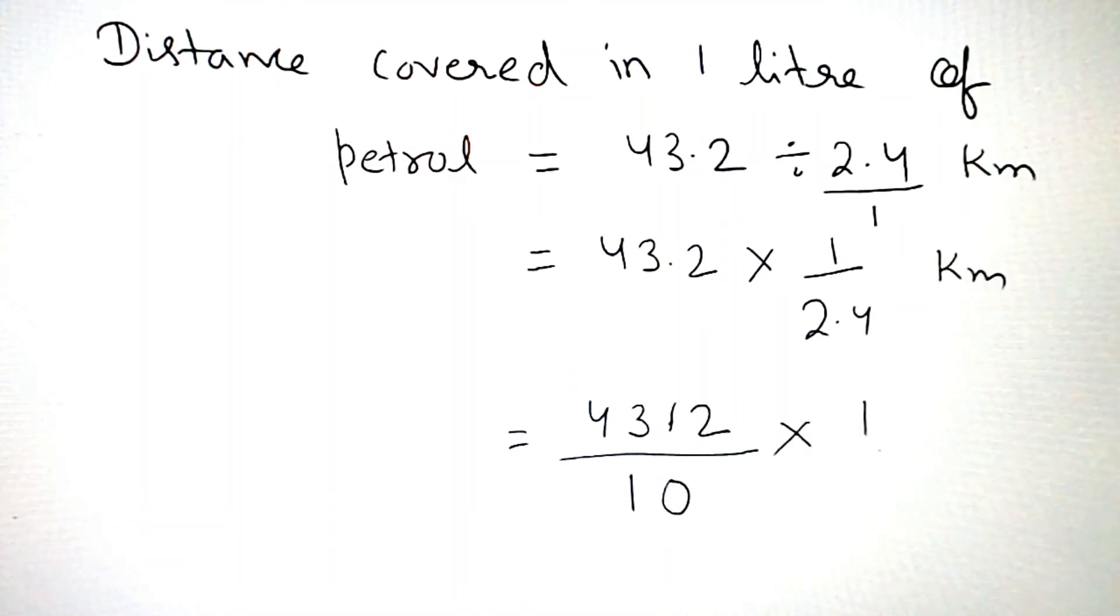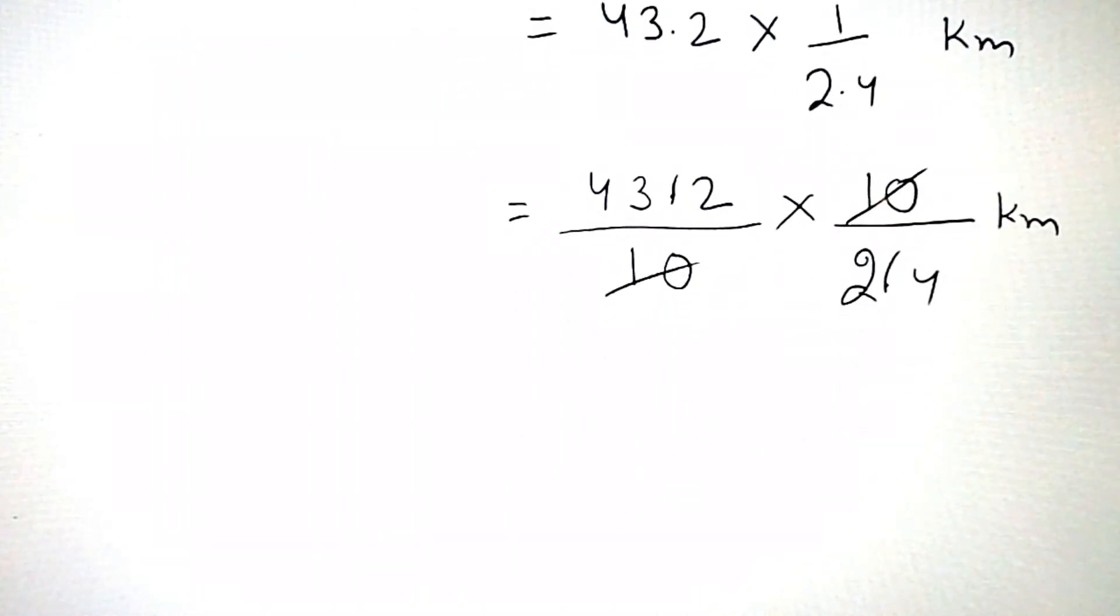2.4, when we remove the decimal, there's one digit after the decimal, so one digit.